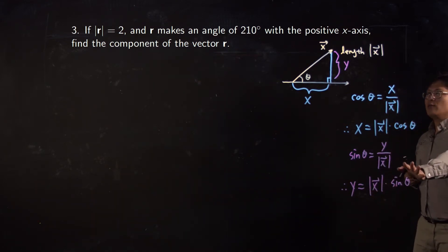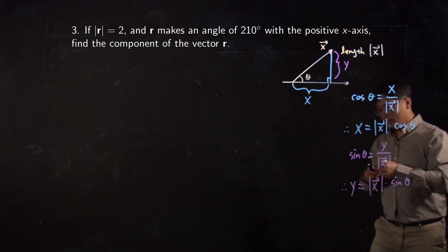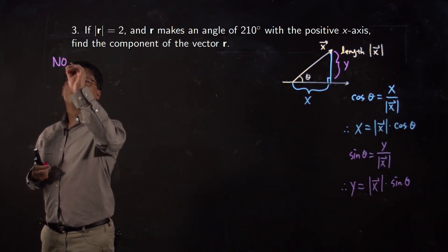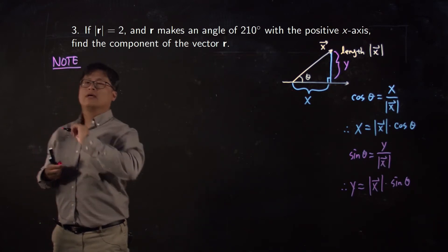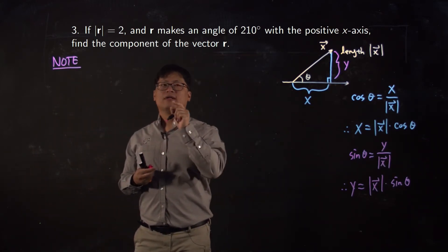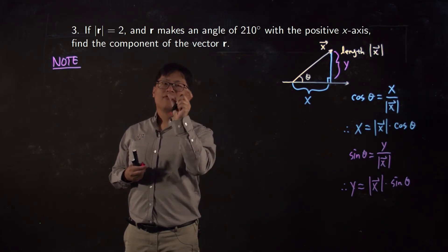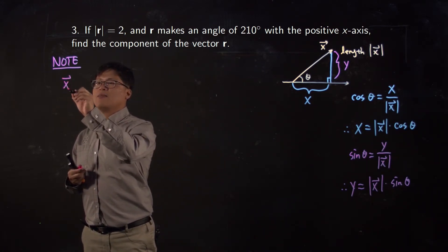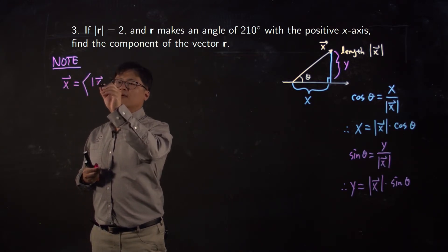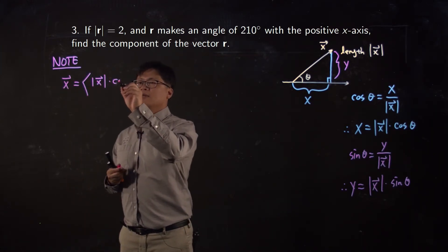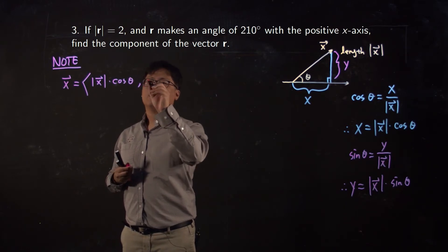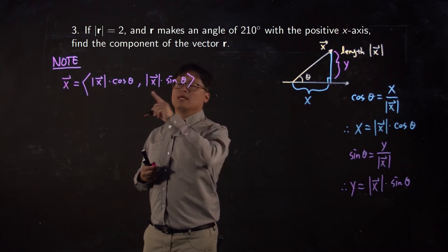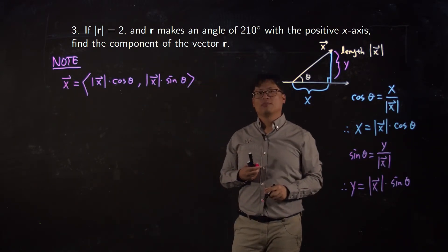Is that clear? So I can give you this as a formula. Here's the note: if you know the length of the vector and the angle from the positive x-axis, then your vector x can be written as (length of vector · cosine θ, length of vector · sine θ) — that is the component form.